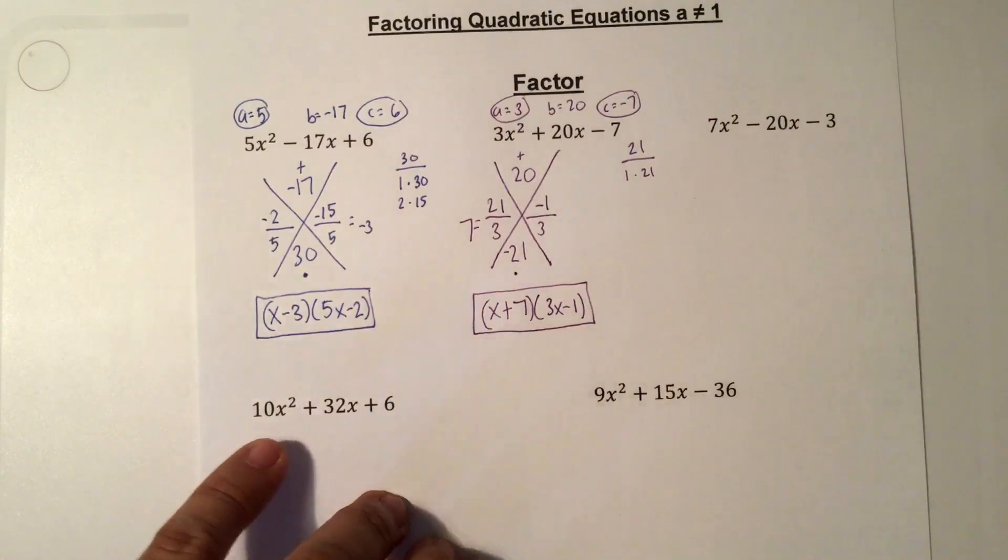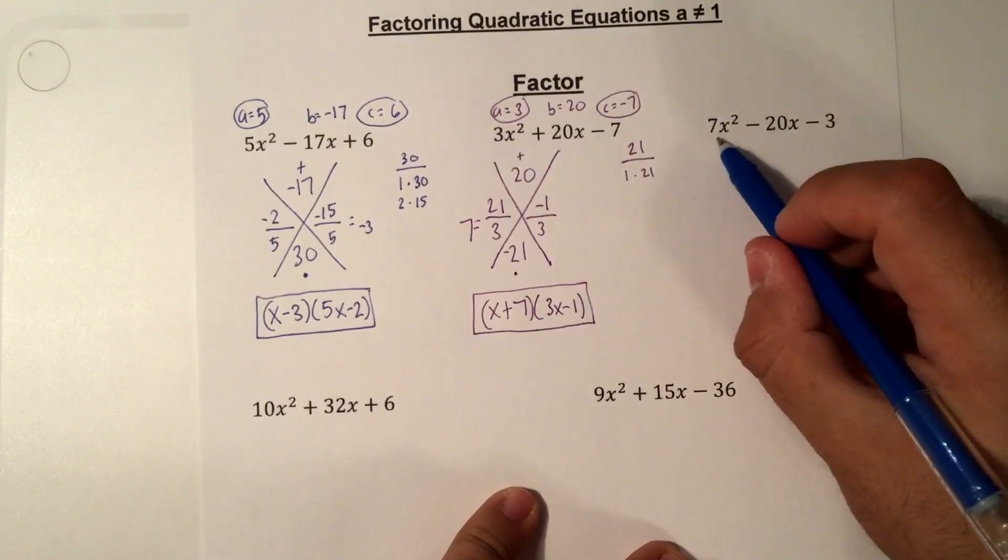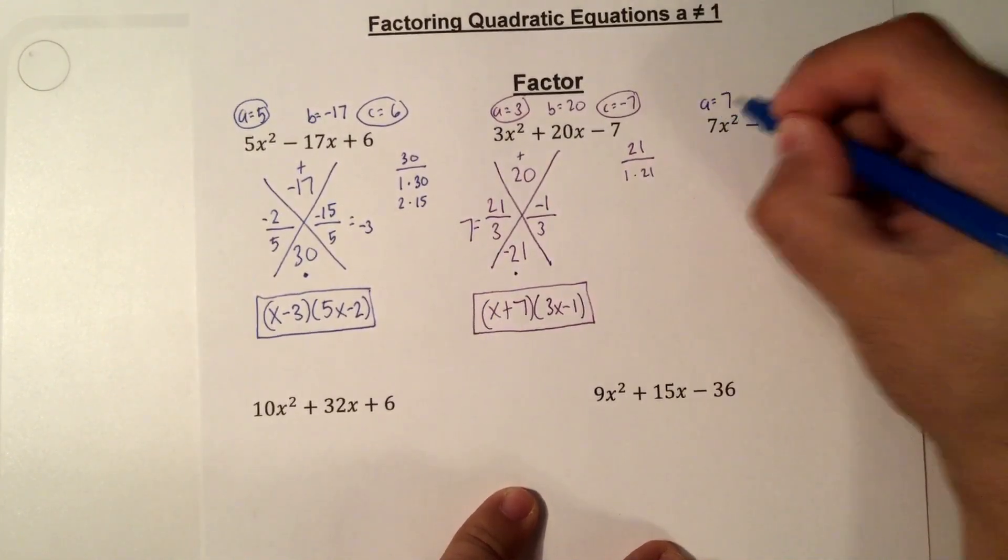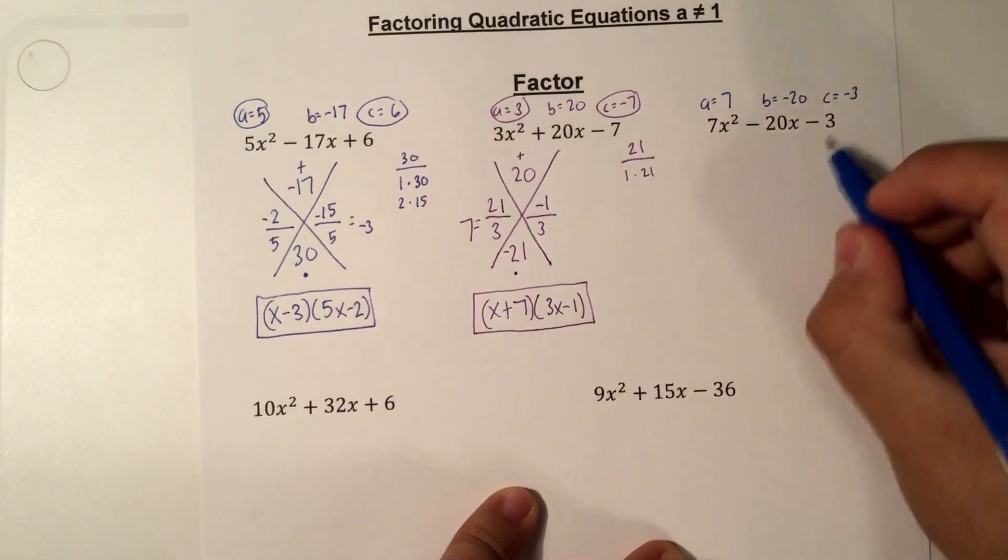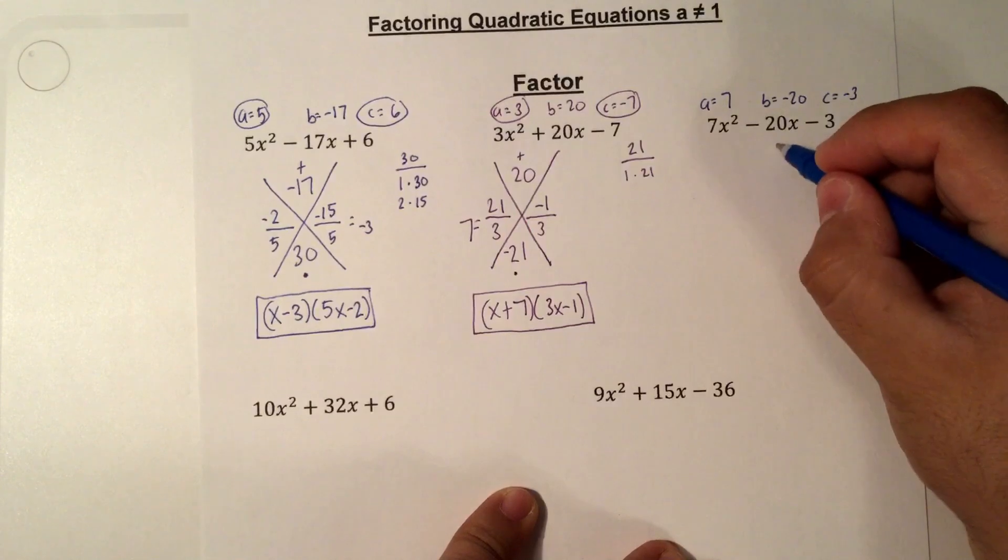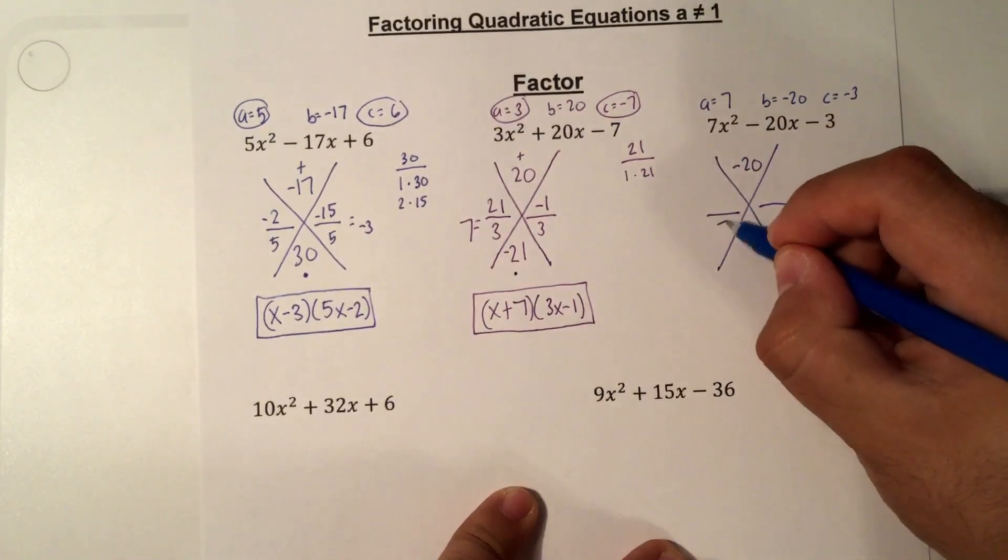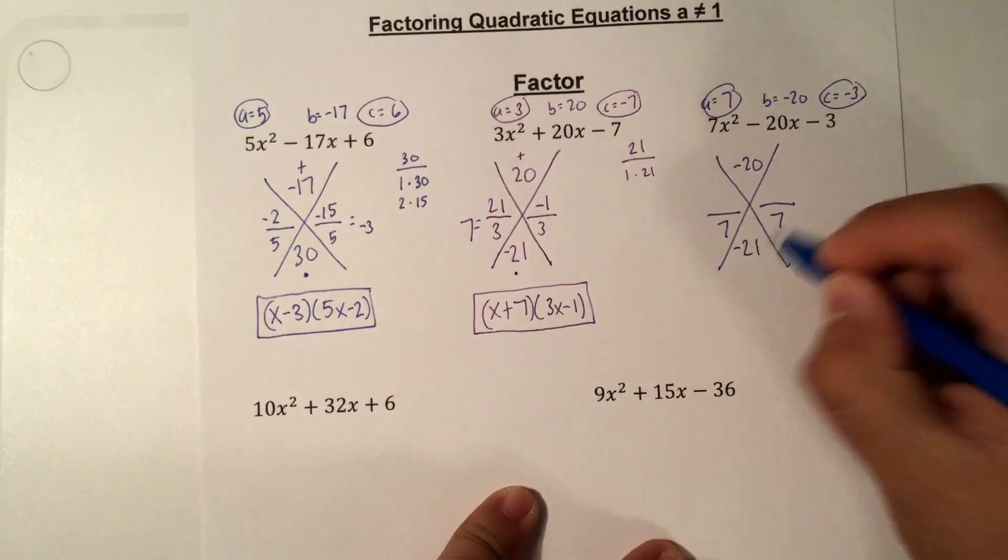On to the next problem. Standard form, yes. GCF, they have nothing in common. So let's identify a is 7, b is negative 20, and c is negative 3. So don't forget the sign that goes with it. x method. Negative 20 on the top, dividing by a, which is 7. 7 times negative 3 is negative 21.